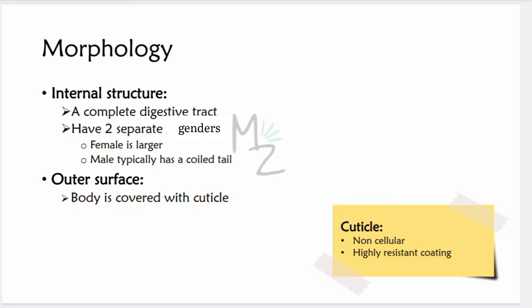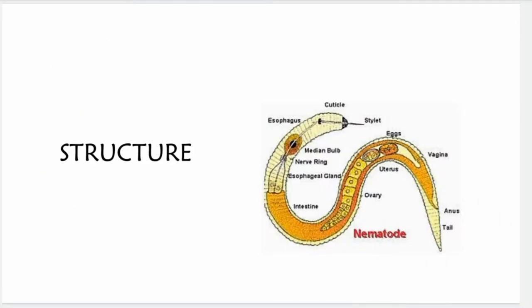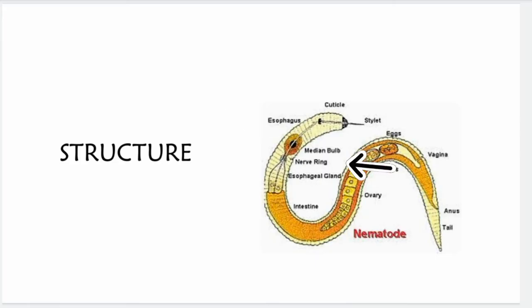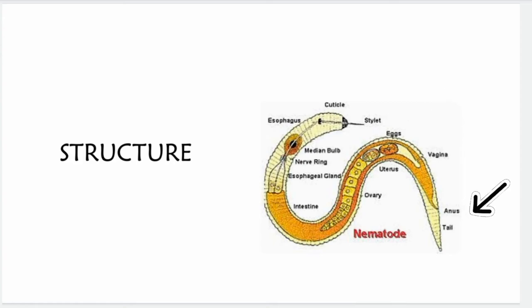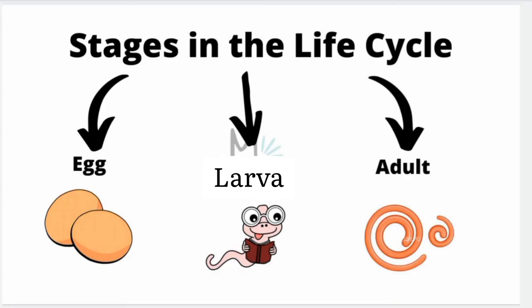The body is covered with a cuticle — a non-cellular, highly resistant coating. As visible in the diagram, the outer surface has this cuticle, and the complete digestive tract includes the esophagus, intestines, and anus. In a female nematode, you can also see the ovary, uterus, eggs within the uterus, and vagina. There are certain stages in the nematode life cycle, each with distinct morphology: egg, larva, and adult.